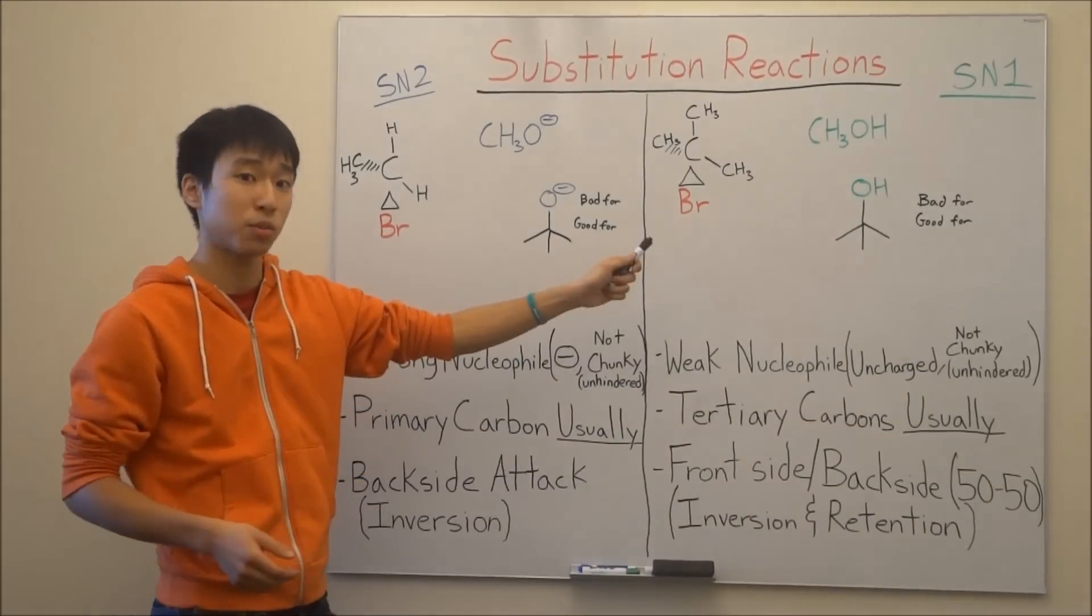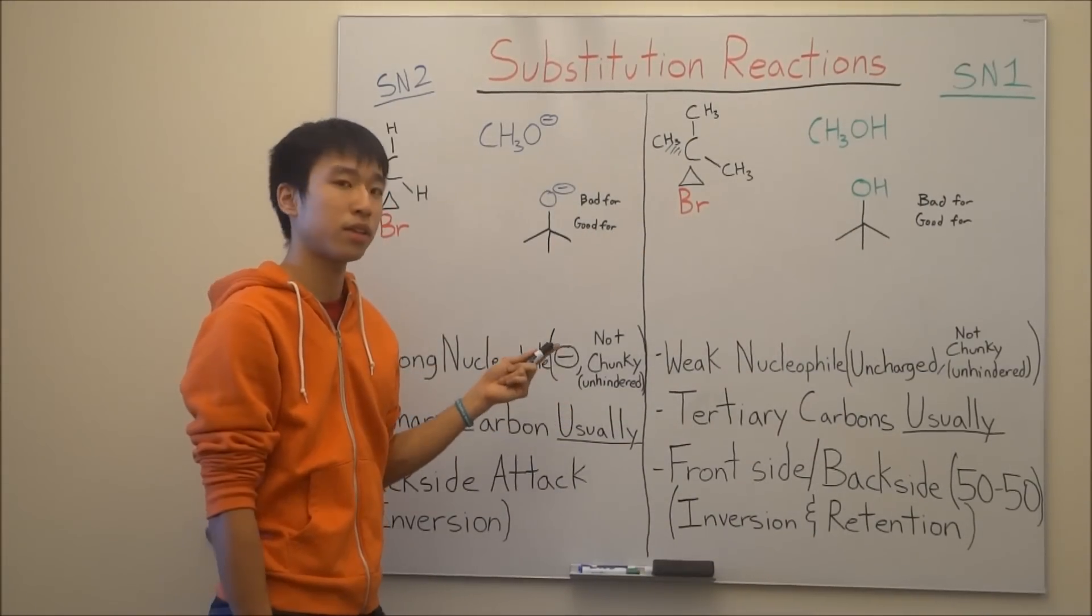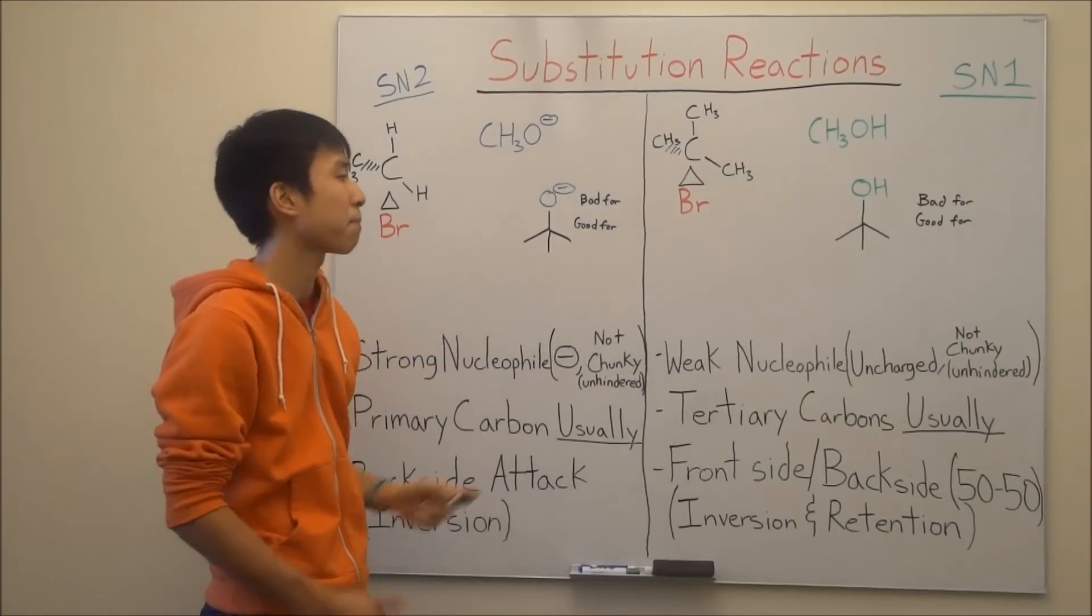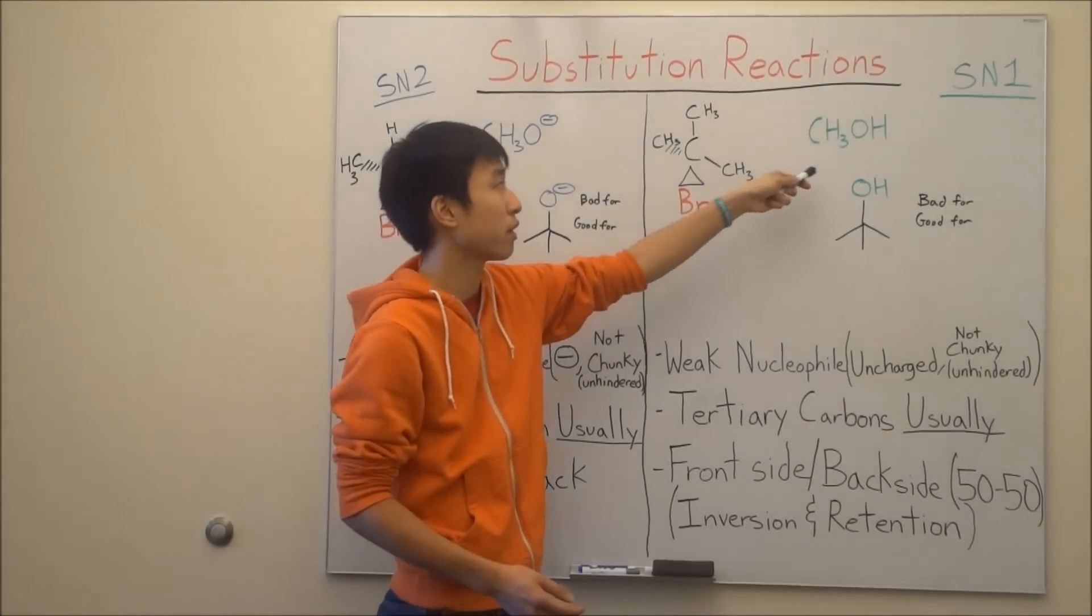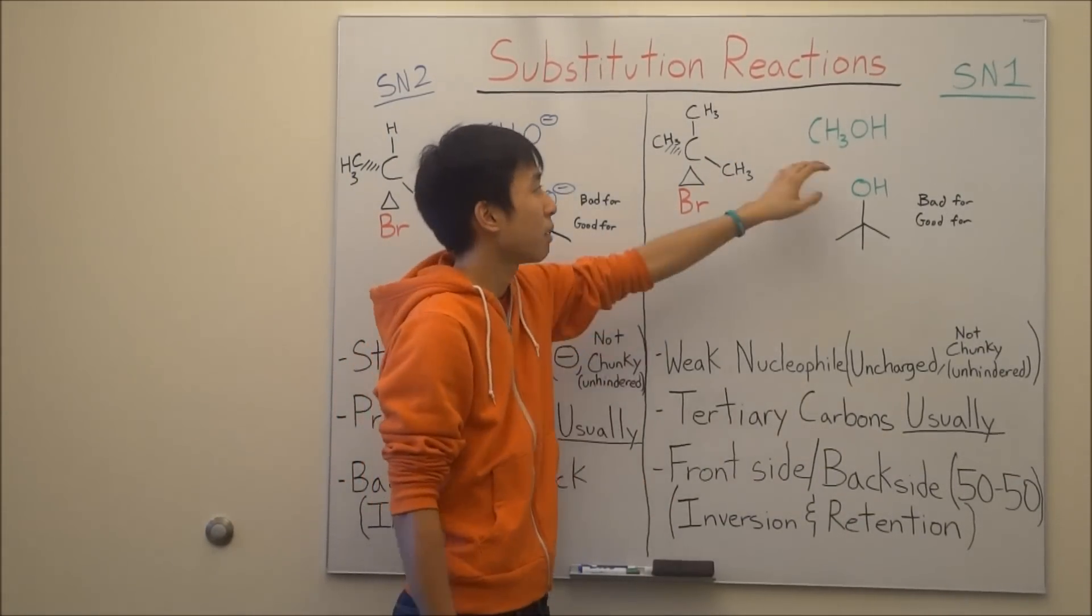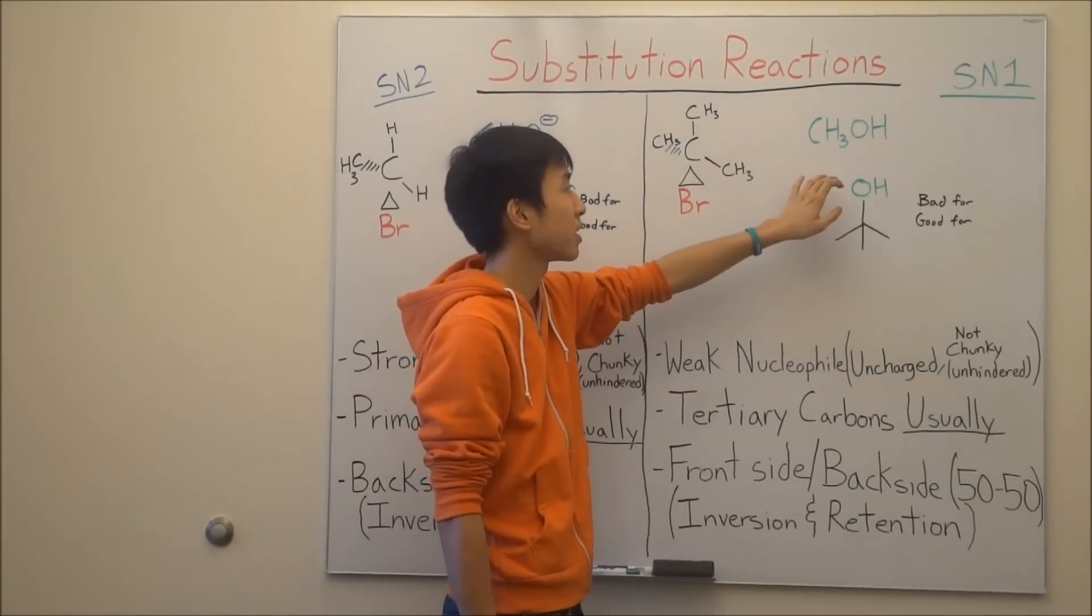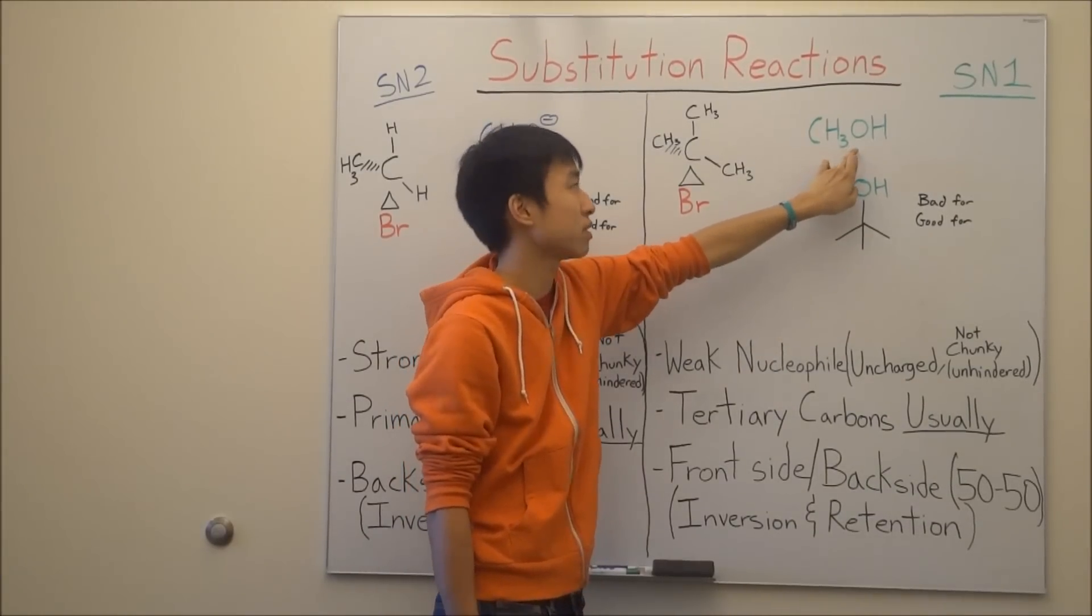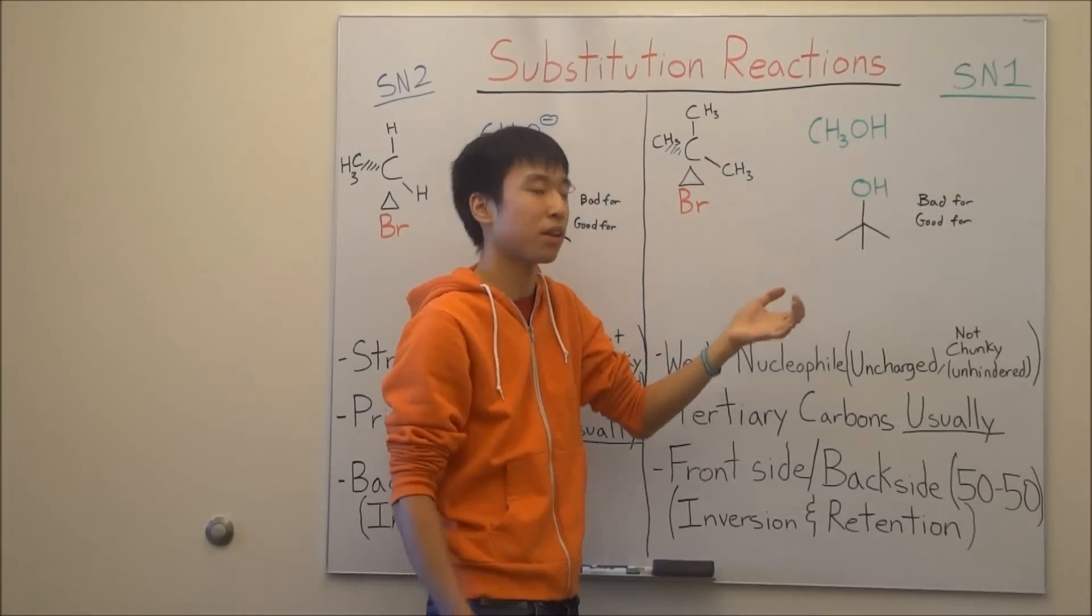And then if you take a look at SN1, the key factor is that instead of a strong nucleophile, you have a weak nucleophile now. If you take a look at our nucleophile here, right, can you try and guess the name? Well, it's methanol, actually. And the reason is because this is a methyl group, and this is an alcohol functional group, so methanol.